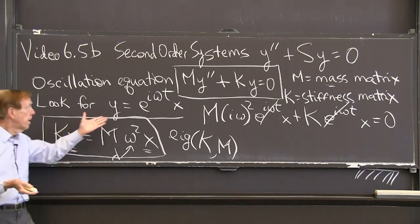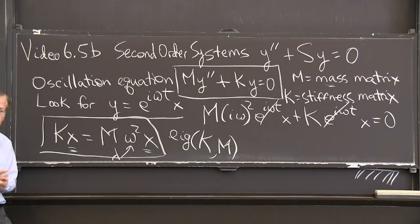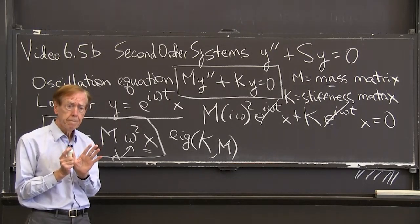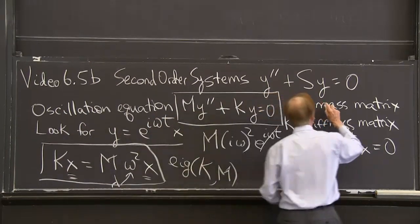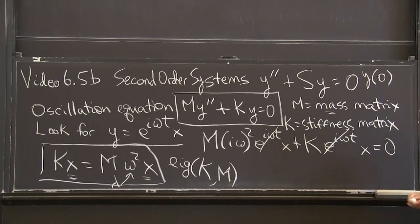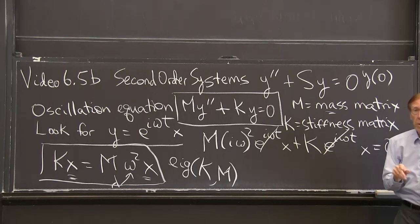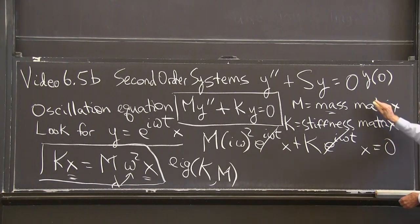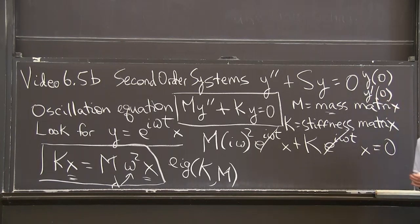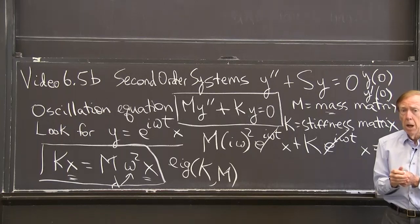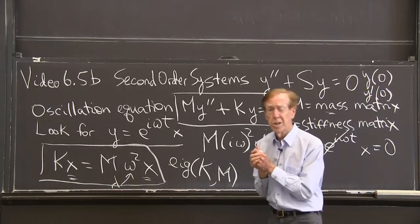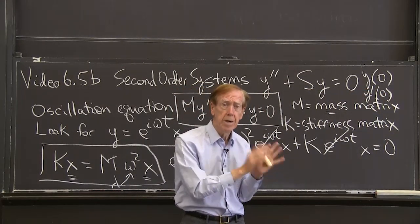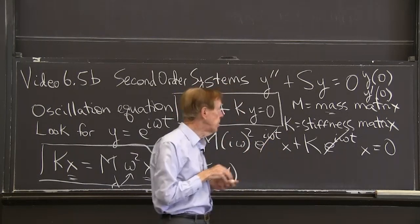How many solutions are we expecting? How many initial conditions do we have? Initially, we give y at 0, the initial condition, the position. But we also give the initial velocity, y prime of 0. Those are vectors, because those tell us the initial condition of n masses. So I have n numbers from y of 0 and n more numbers, 2n altogether, initial conditions. I'm going to need 2n solutions to match 2n initial conditions and solve the equation.